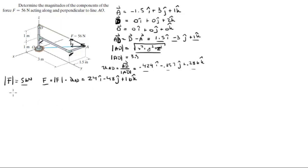Now we need to find the vector AO. The vector AO is found by subtracting A from O. So it's basically going to be the opposite of A because O is 0, 0, 0. So it's going to be 1.5I minus 3J minus 1K.